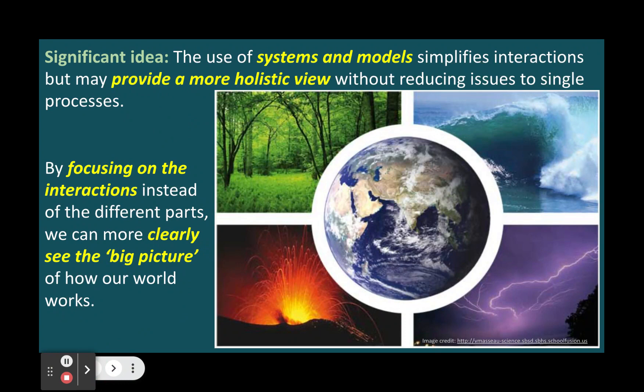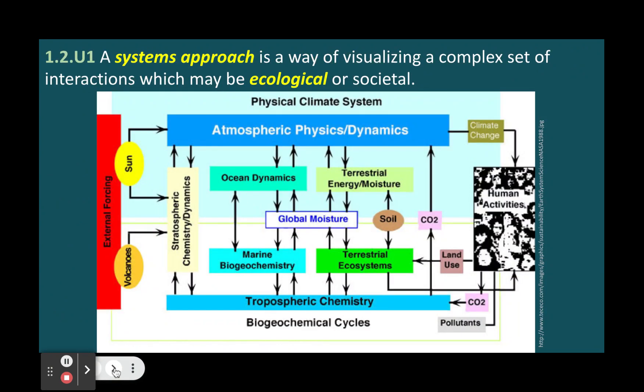One of the benefits of using a systems approach is that it can reveal the emergent properties of the system. Emergent properties are characteristics or behaviors that arise from the interactions of the parts, but are not found in any of the individual parts.